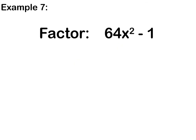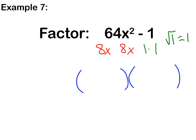Pause the video now as you try example 7. Press play to go over your answer — you can do it, this is close to the end, finish strong. So I know this is 8 times 8 for 64, and x times x for x squared. And 1 might be a little more complicated, but remember the square root of 1 is just 1, so I'm going to have 1 times 1. Set up my parentheses: first term goes in front, second term goes in back, and finish with opposite signs.